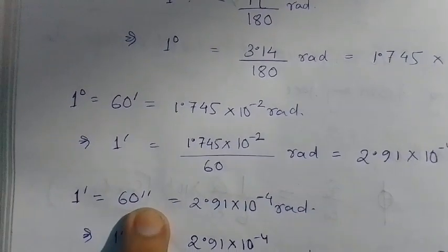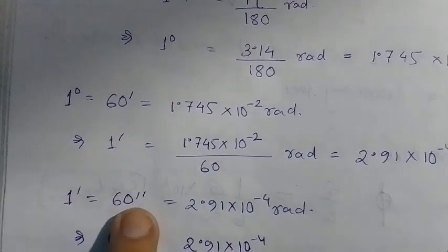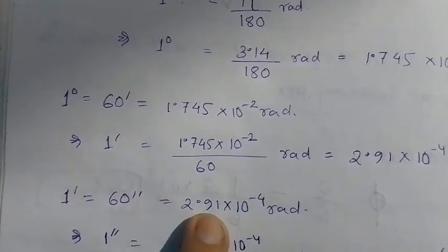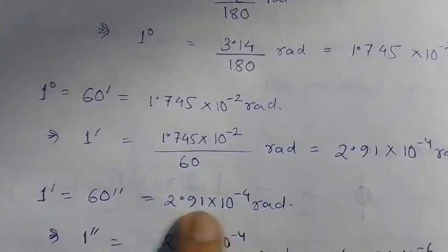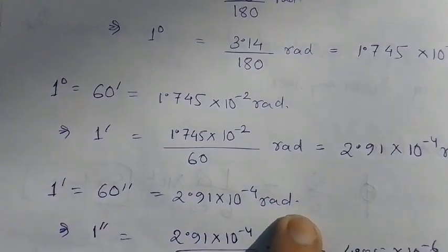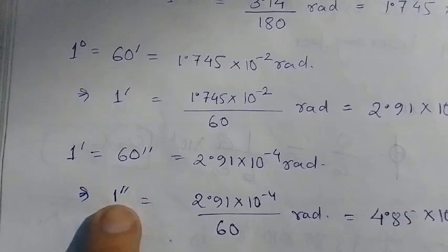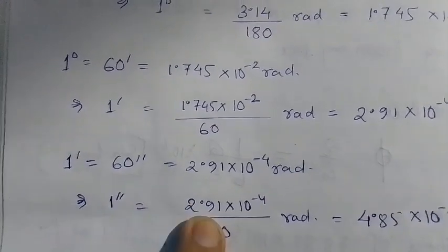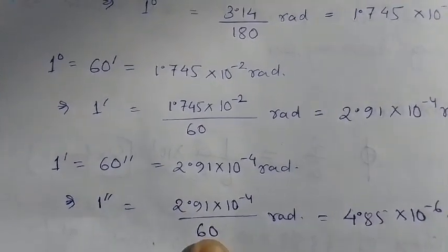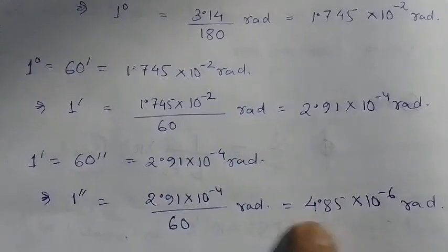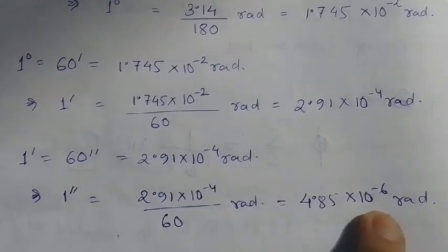For one minute we have 60 seconds, so we have 2.91 into 10 to the power minus 4 radians. If we try to find out for one second, then it will be divided by 60 and from this we can obtain 4.85 into 10 to the power minus 6 radians.